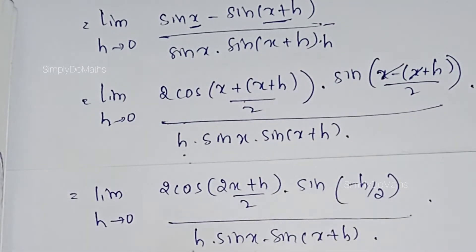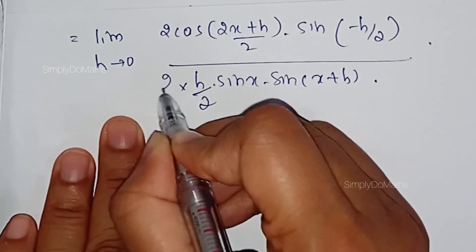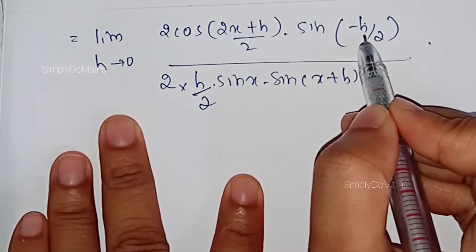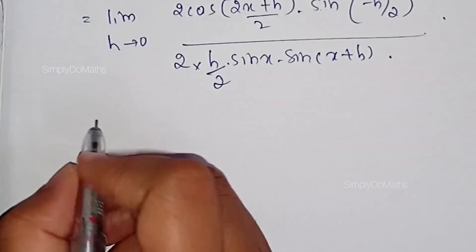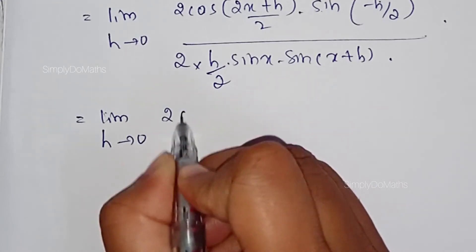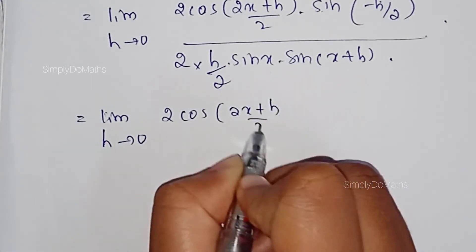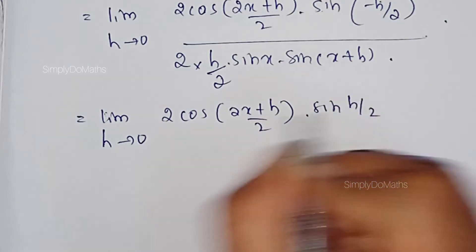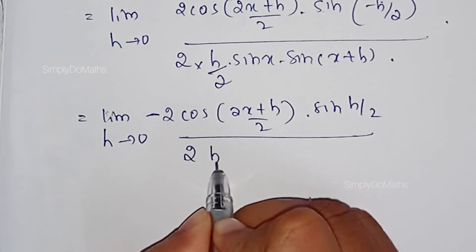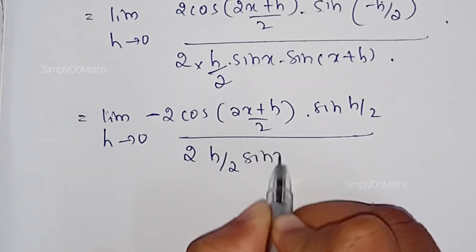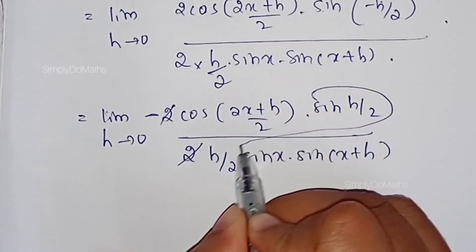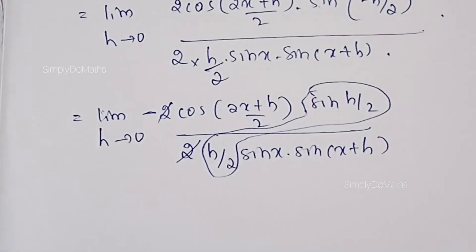Here we have h/2. Since sin(−θ) = −sin(θ), we can write this as: limit as h tending to 0 of [−2 cos((2x+h)/2) · sin(h/2)] divided by [2 · (h/2) · sin x · sin(x+h)]. The 2's cancel, and we need to combine sin(h/2)/(h/2) to use the standard limit. As you know, limit as θ tending to 0 of sin θ / θ equals 1.